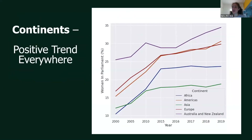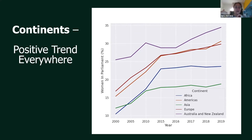The first thing I looked at was the temporal trend at the continent level — I wanted to know what was going on in the world in the past 30 years. This figure is good news, because all continents made positive progress. We can see Australia and New Zealand leading all the way, and Europe and the Americas nearly doubling their averages.